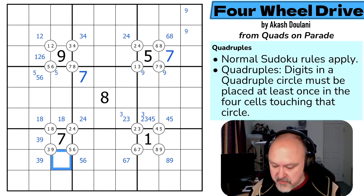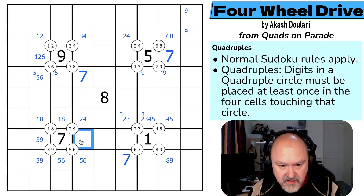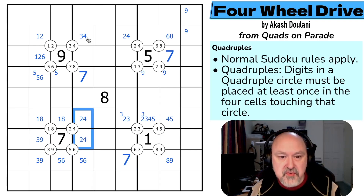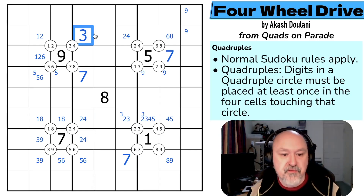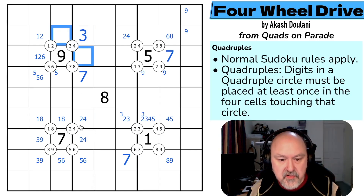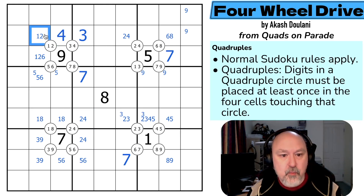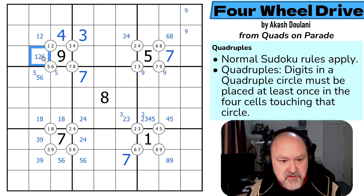And if this is the one-eight, that can't be a one or eight — that's a three-nine, making that a three-nine pair. Now this can't be three or nine, so it's five-six, making that a five-six pair, making that a seven. This is the two-four pair, which looks up making that the three.